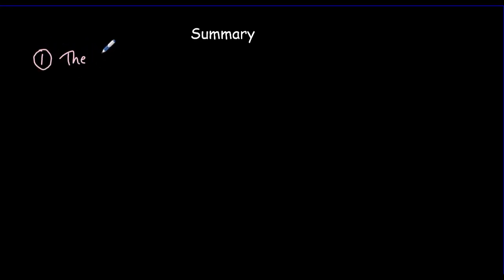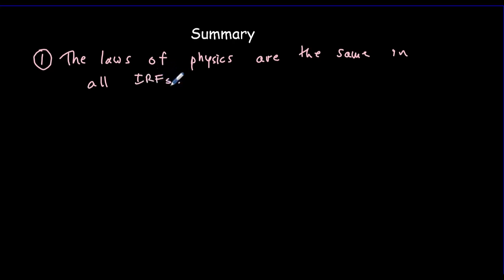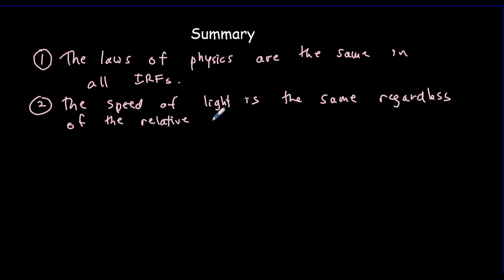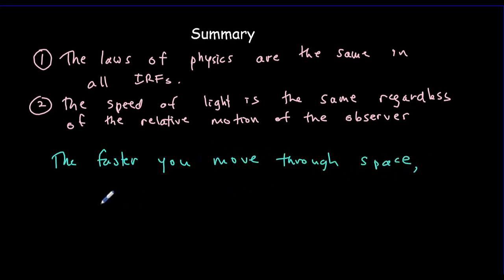Let's summarize the big ideas. The first postulate states that the laws of physics are the same in all inertial reference frames, where an inertial reference frame moves at constant velocity. The second postulate states that the speed of light is the same regardless of the relative motion of the observer. From this we found that space and time had to be entangled, and that time can no longer be absolute — summarized as: the faster you move through space, the slower you move through time. Please subscribe, sign up for notifications, become a member or Patreon, and ask questions. Any participation is greatly appreciated.